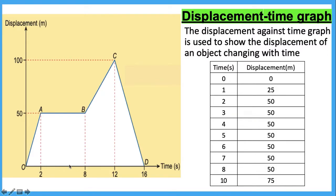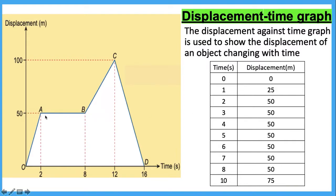And at 4 seconds until 8 seconds, the displacement remains at 50 meters. Why, even though the time changes, does the displacement still remain the same? This is because during this period of time, the object stopped moving and rested.